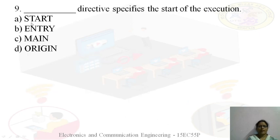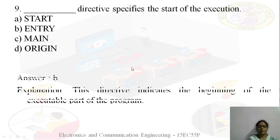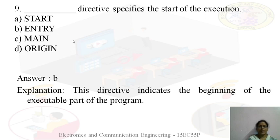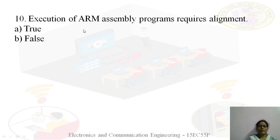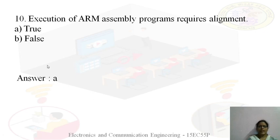Next: the blank directive specifies the start of execution — options are START, ENTRY, MAIN, or ORIGIN. The answer is ENTRY — this directive indicates the beginning of the program. Last question: execution of ARM assembly programs requires alignment — is this true or false? We saw while executing the program that when we missed the alignment we got an error. So this ARM instruction does require alignment — the answer is option A, True.